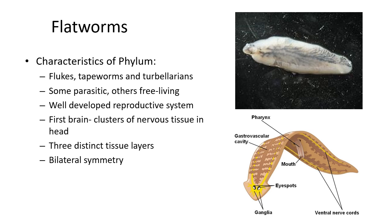Moving on to flatworms, also known as Platyhelminthes. They can be infectious agents such as flukes and tapeworms — some are parasitic, others are free-living. They have a well-developed reproductive system, a very basic nervous system, three distinct tissue layers, and are bilaterally symmetrical. Planarians, shown in the bottom right, are research animals — you can cut their head and they'll grow two heads, cut them in half and they'll grow two new ones.